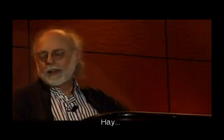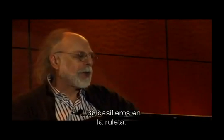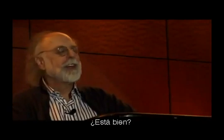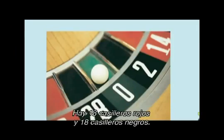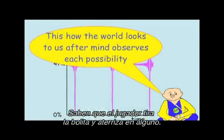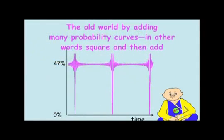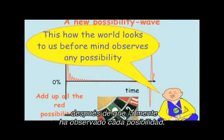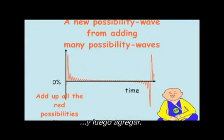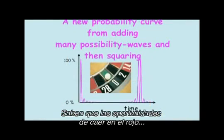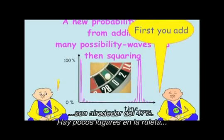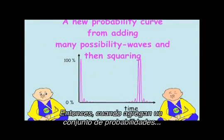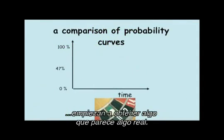Gambling is something we all understand. In roulette, we have 38 slots on the roulette wheel — 18 red slots and 18 black slots. The croupier sends the ball around and it lands somewhere. This is how the world looks to us after the mind has observed each possibility. This is what you mean by squaring and then adding. The odds of getting the color red is around 47%. When you add up a whole bunch of probabilities, you start to get something which is starting to look like a real thing.